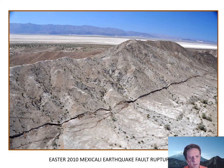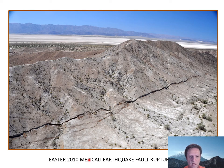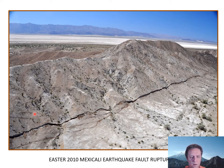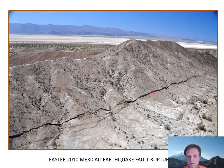Closer to home, the 2010 Easter Mexicali earthquake produced an actual fault rupture visible at the surface — this is the fault trace. When the fault broke and fractured, it caused the earthquake. This is what we call a fault line scarp: the ground on one side dropped down relative to the other by a couple of meters. This kind of major shifting and breakage of the ground generates a lot of energy.